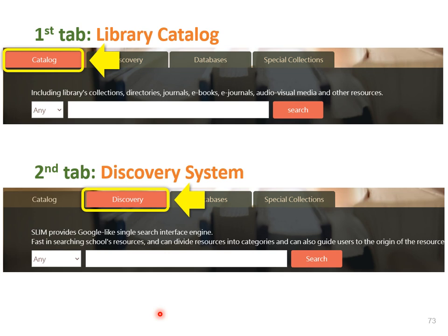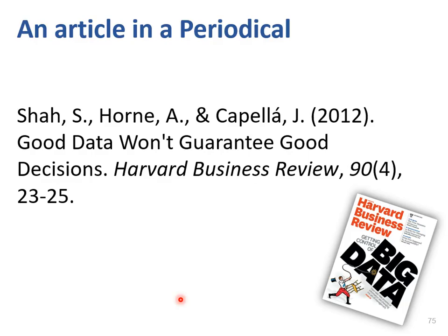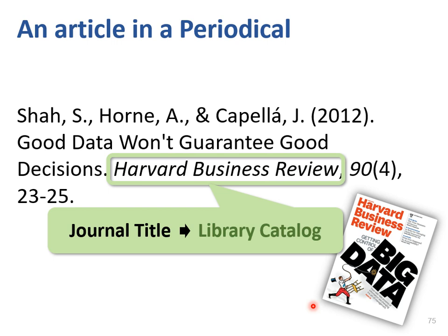If the library catalog is not enough for you, discovery provides a convenient starting point for finding research materials. If you want to search for a specific article in a periodical, now you have a citation of the journal article. In this example, the article title is Good Data Won't Guarantee Good Decisions, published in Harvard Business Review. As we mentioned earlier, in the library catalog we can only search for the journal title. If you want to search with the article title, you can use the discovery system.